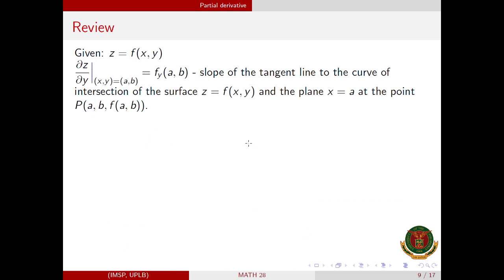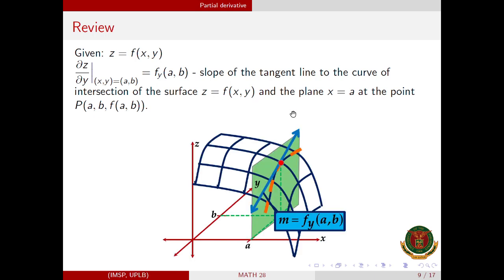In the diagram, the green plane is y equals b, which is parallel to the xz-plane. The blue line is the tangent line to the curve at the point (a, b, f(a,b)), and this tangent line lies on the plane y equals b. Similarly, the partial derivative with respect to y at (a, b) is the slope of the tangent line to the curve of intersection of the surface with the plane x equals a, and the green plane in that case is parallel to the yz-plane.